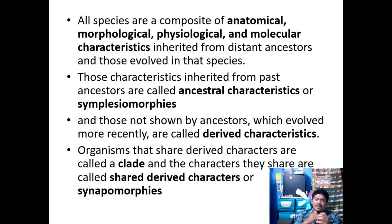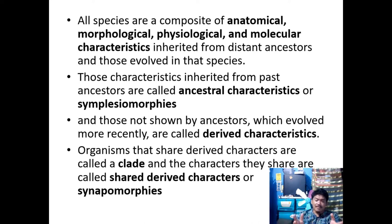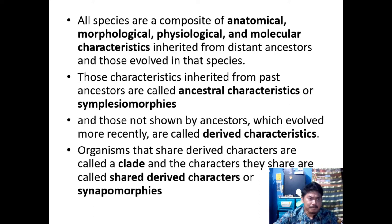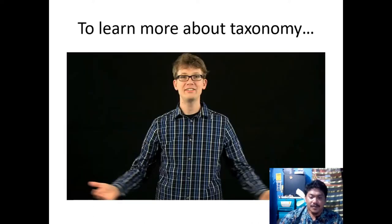Organisms that share derived characters are called a clade, and the characters they share are called shared derived characters, or synapomorphous. Examples of synapomorphous traits include the development of wings or limbs.